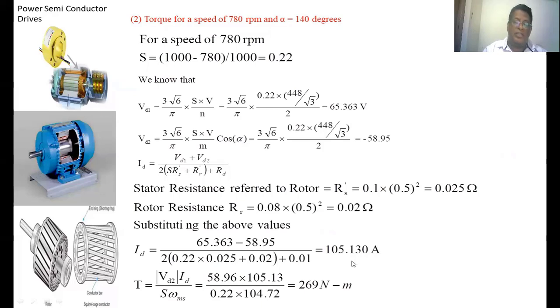The torque developed in the induction motor with Scherbius drive = Vd2·Id/(S·ωs). We know Vd2 = 58.96V and Id = 105.13A. Substituting: T = (58.96 × 105.13)/(0.22 × 104.72) = 269 N-m. This is the torque developed in the induction motor at 780 rpm and firing angle 140°.